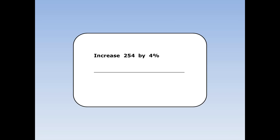Increase 254 by 4%. I want the original 100% plus an extra 4%, which is 104%. 104% is 1.04 as a decimal. 254 times 1.04 is 264.16.